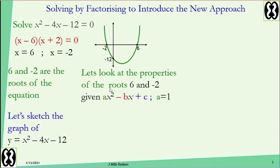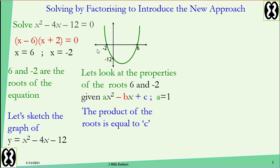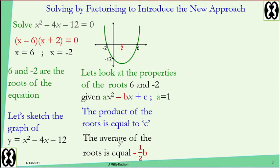Here are the properties of quadratic graphs when the coefficient of x squared is one. First, the product of the roots is always equal to your c value — six times negative two gives negative 12, which matches the constant. Second, when you find the average of your roots, it will always equal negative one-half of the value of b.